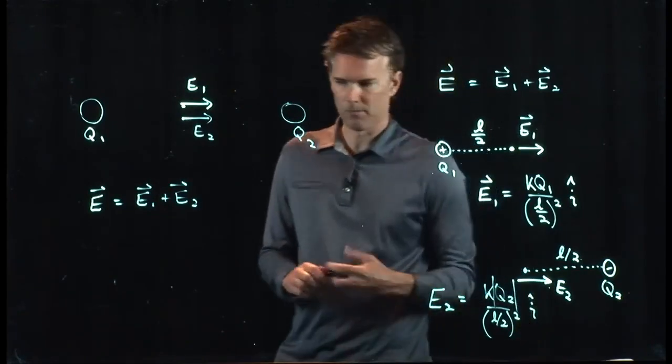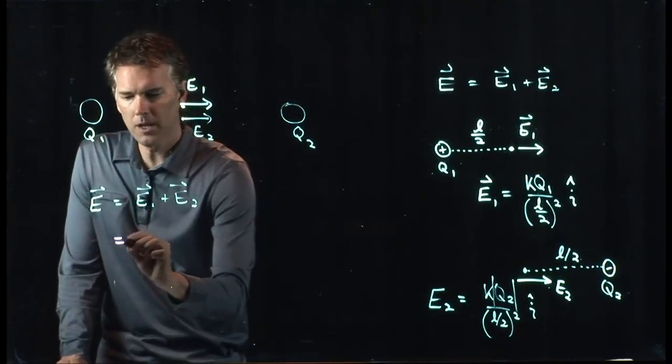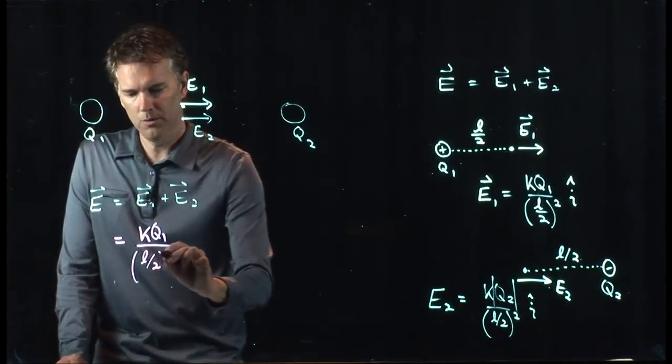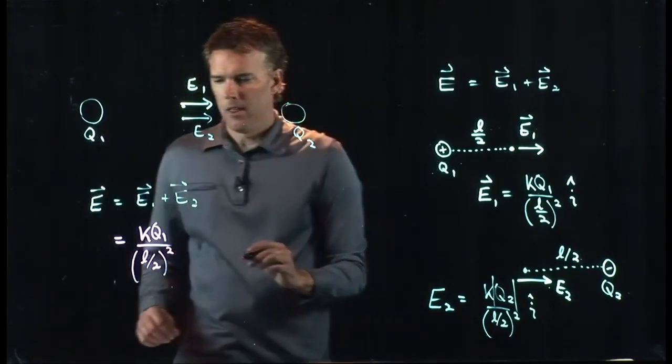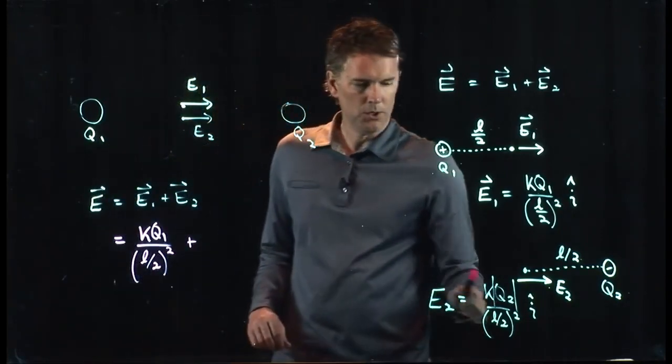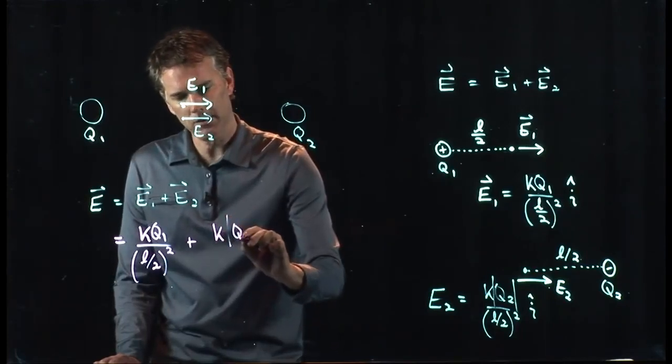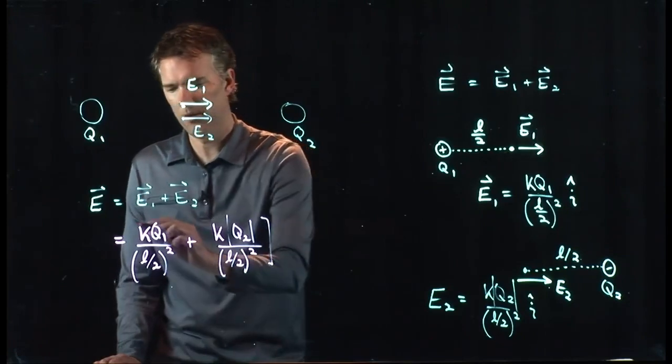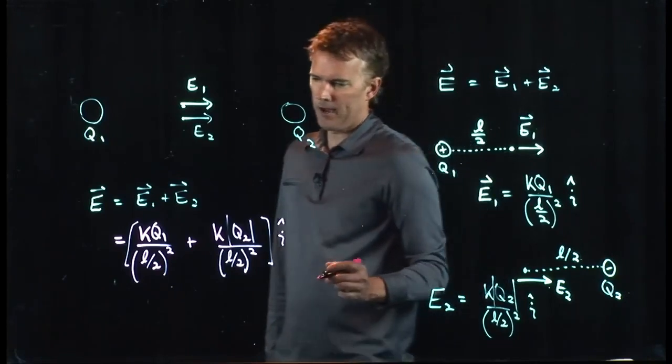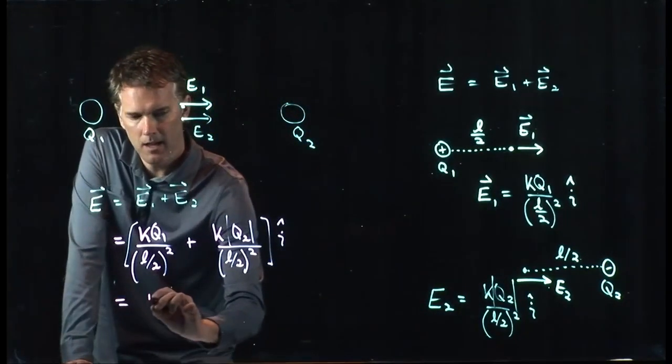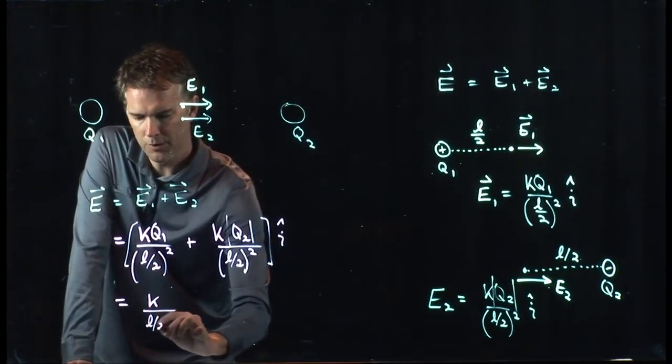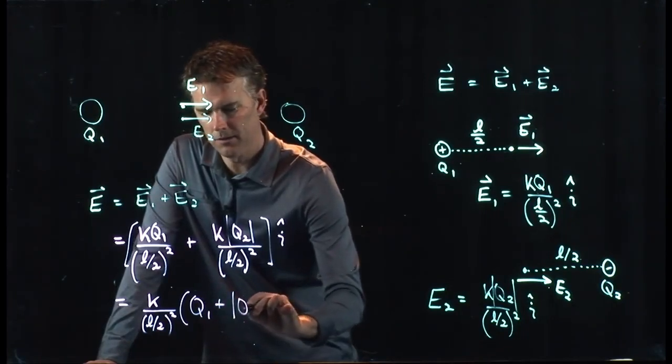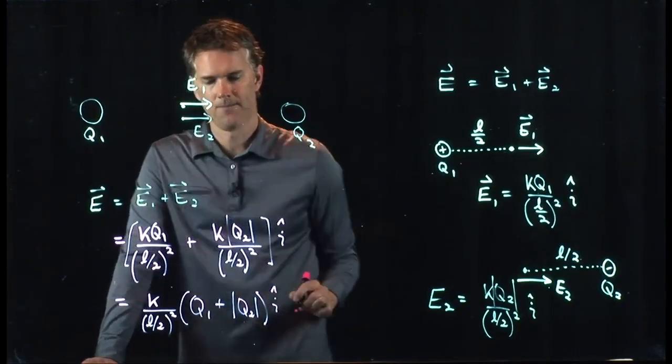Definitely going to need some new pens in here. We'll try the pink one. And now we know what those are. E1 is KQ1 divided by L over 2 quantity squared. That is in the i hat direction. E2 is K times the magnitude of Q2 divided by L over 2 quantity squared. Both of those are in the same direction i hat. And now we have some nice common factors here. We have K in both of those. We have L over 2 quantity squared in both of them. And then we have Q1 plus magnitude of Q2, i hat.